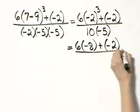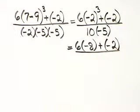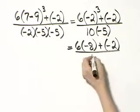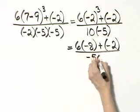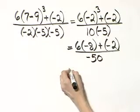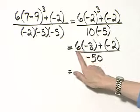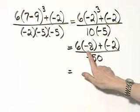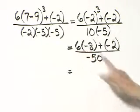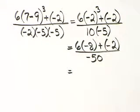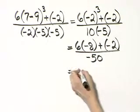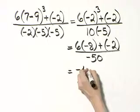Let's finish in the denominator. What is 10 times negative 5? That's negative 50. And now let's continue in the numerator. 6 times negative 8 — that's negative 48.